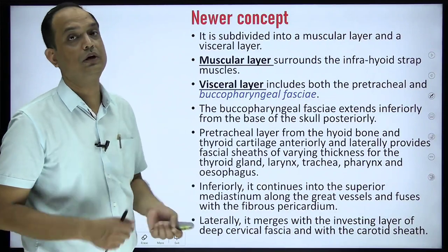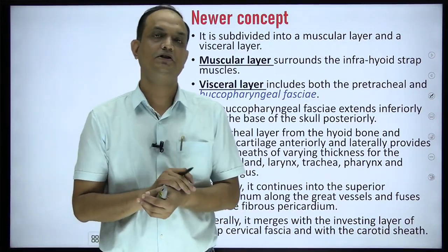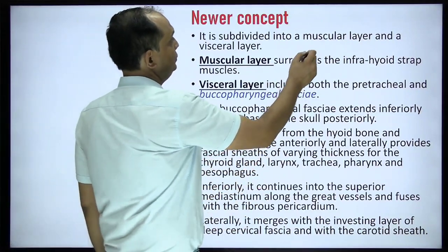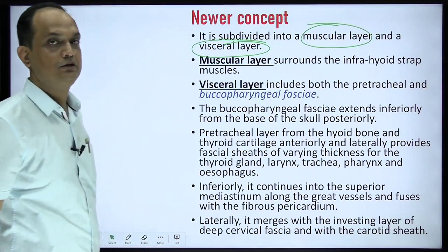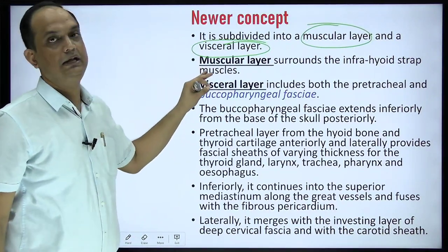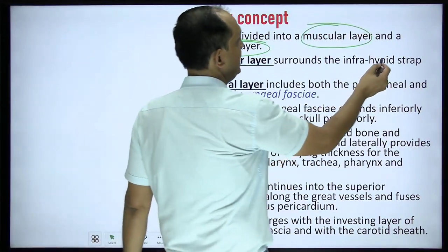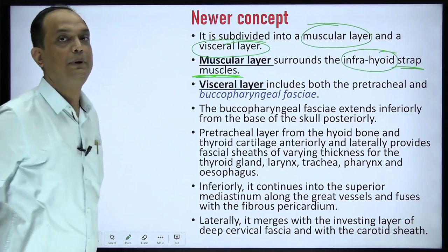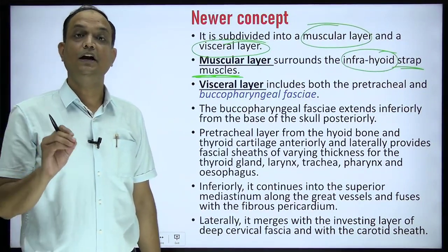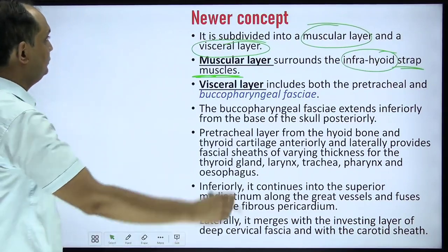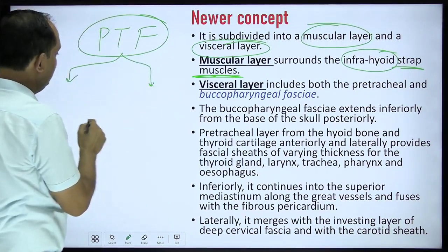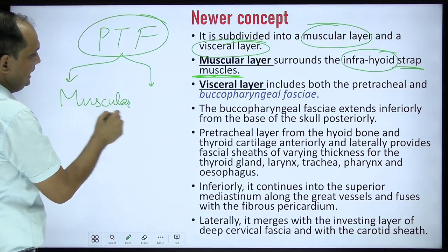Now for the newer concept: as per the newer concept, the pre-tracheal fascia is divided into two layers - a muscular layer and a visceral layer. The muscular layer refers to the part enclosing the infrahyoid strap muscles. The visceral layer refers to the pre-tracheal fascia proper plus the buccopharyngeal fascia.